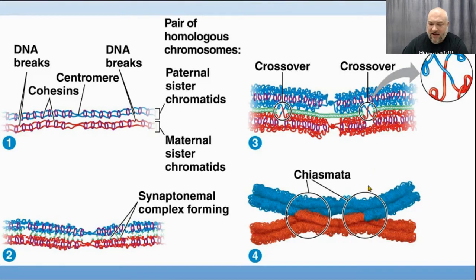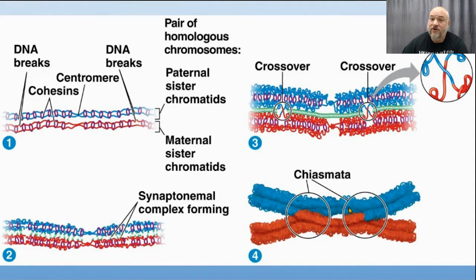After crossing over, one chromosome is now blue-red-blue and the one below it is red-blue-red — we've swapped chunks of chromosomes from one to the other. These chromosomes are no longer copies of the parent chromosomes; they are unique combinations of genes.